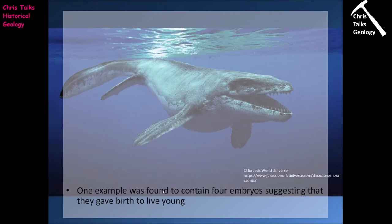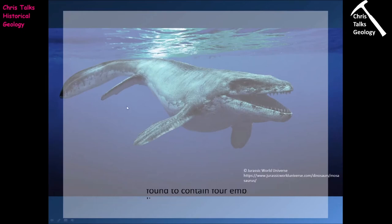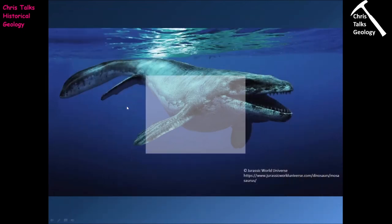One mosasaur example was also found to contain four embryos, once again suggesting that they gave birth to live young.